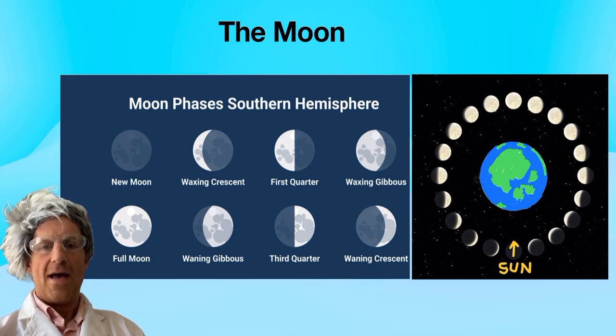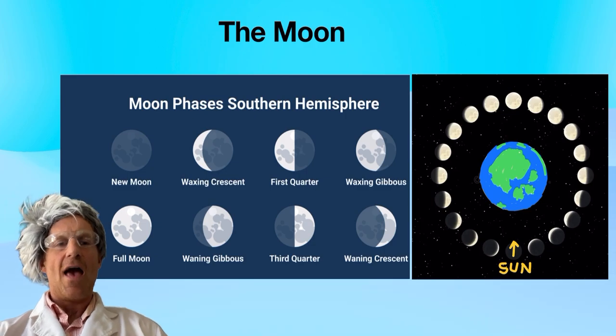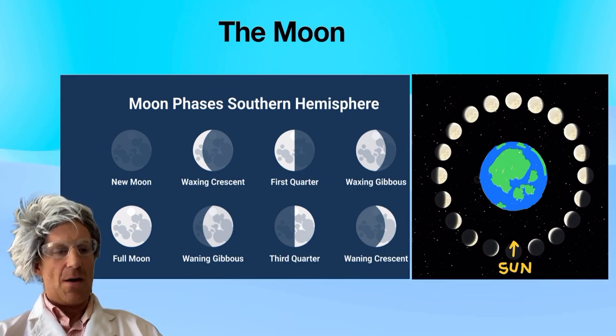Finally we have our waning crescent which is the end point of the 29.5 days. I should say all the way back to the new moon. It's 29.5 days, aka a month. Bit of a joke that month but there we go.